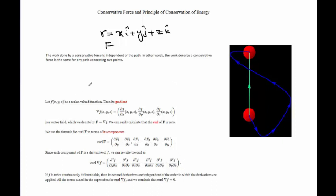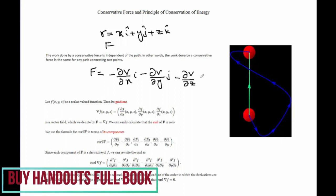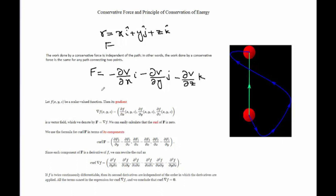Mathematically, we say that we have a force or a scalar function v of x, y, z. We can write this as minus the partial derivative of v with respect to x in the direction of i, minus partial derivative of v with respect to y in j. We can write this as minus delta v, which is called the gradient of v. So if f can be written as minus the gradient of v, then f is conservative.